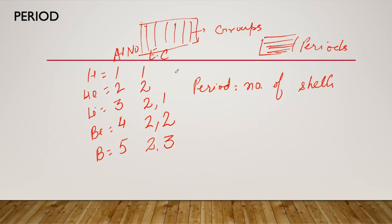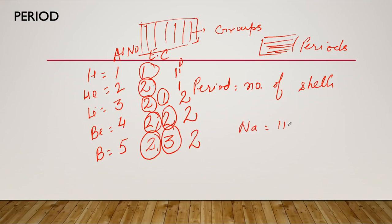What is period equal to? Period equals the number of shells. For hydrogen, number of shells is 1, so period is 1. Helium's number of shells is 1, so period is 1. Lithium's number of shells is 2, so period is 2. Beryllium's number of shells is 2, so period is 2. Boron's number of shells is 2, so period is 2. Now sodium is 11, which is 2, 8, 1. So sodium lies in 3rd period.